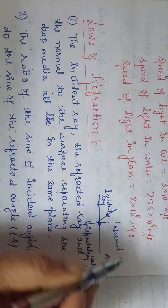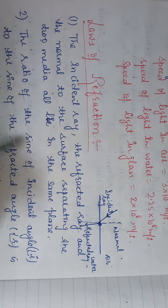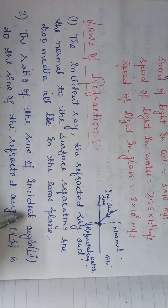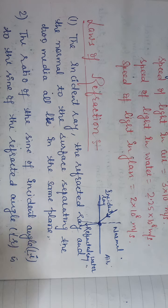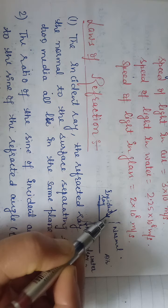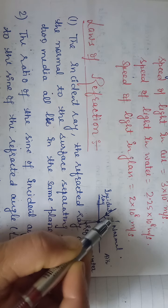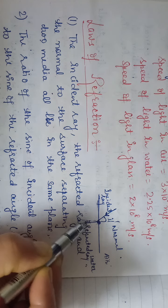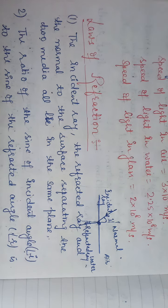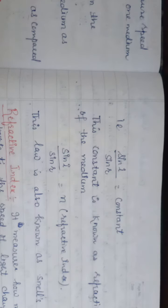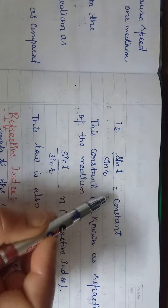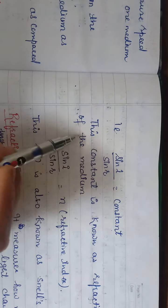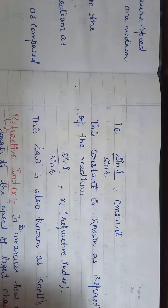The second law: the ratio of the sine of the angle of incidence to the sine of the angle of refraction is constant for a pair of two media. Here this is the angle of incidence and this is the angle of refraction. It means the trigonometric ratio sine i upon sine r is equal to a constant.